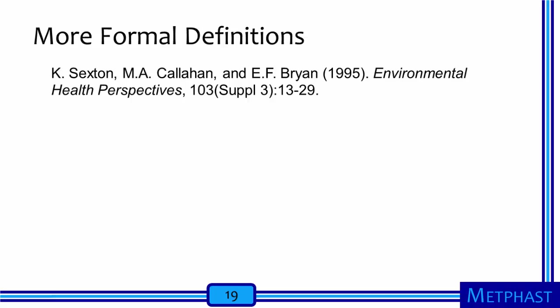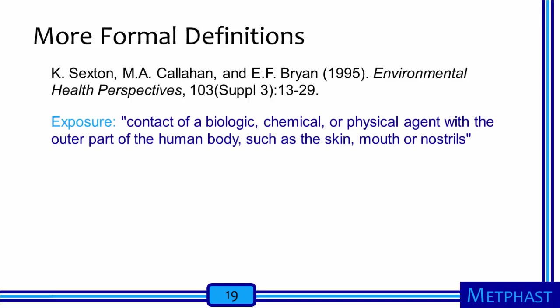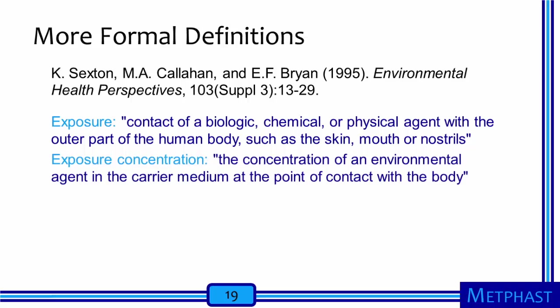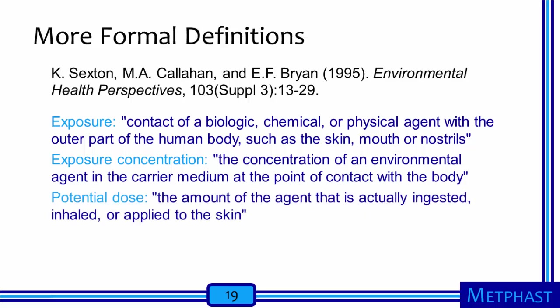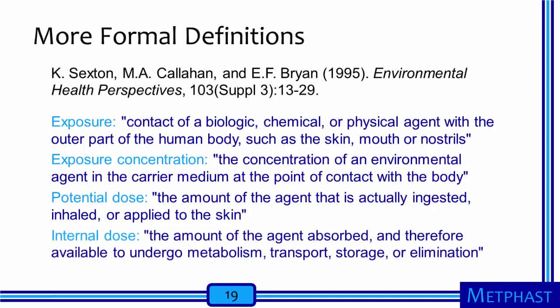From Sexton and co-authors, a more formal definition of exposure is contact of a biologic, chemical, or physical agent with the outer part of the human body, such as the skin, mouth, or nostrils. Exposure concentration is the concentration of an environmental agent in the carrier medium at the point of contact with the body. Potential dose is the amount of the agent that is actually ingested, inhaled, or applied to the skin. The internal dose is the amount of the agent absorbed, and therefore available to undergo metabolism, transport, storage, or elimination.